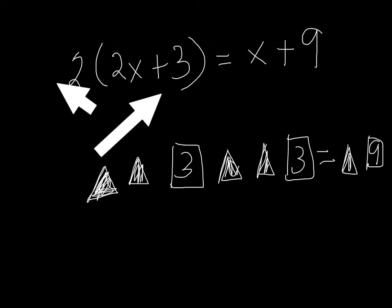Two pawns plus three with another two pawns plus three equals a pawn plus nine. Now I'm going to take one pawn from each side.